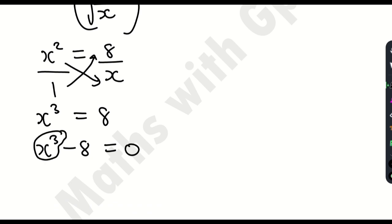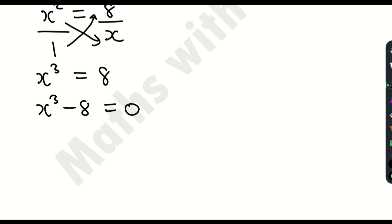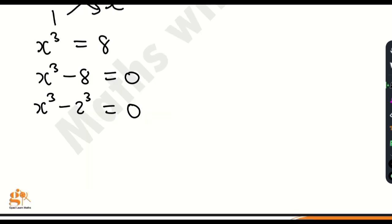Moving it to the left hand side, I'm going to have x cubed minus 8 is equal to 0. Now 8 can be expressed as 2 cubed, so I'm going to have the difference of two cubes. x cubed minus 2 cubed equals 0, because 2 times 2 is 4 and 4 times 2 is 8.